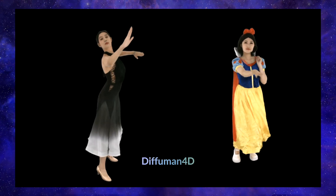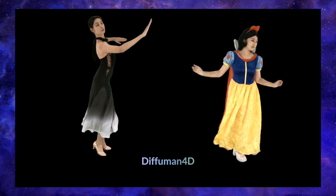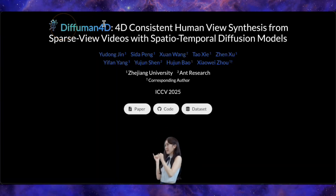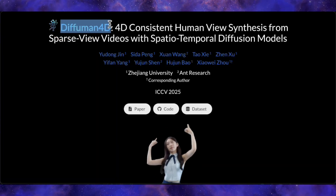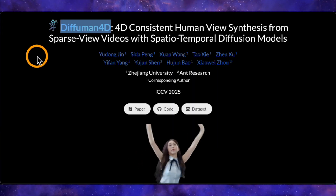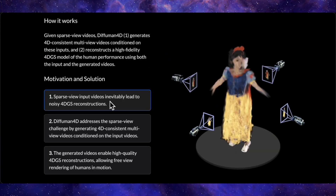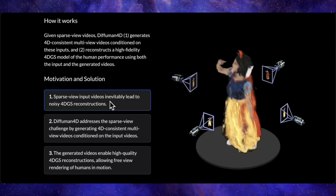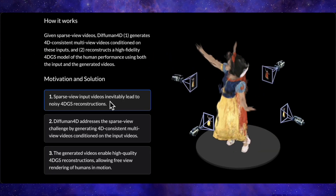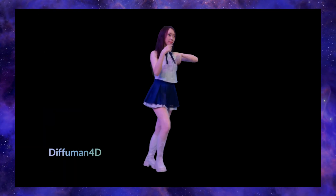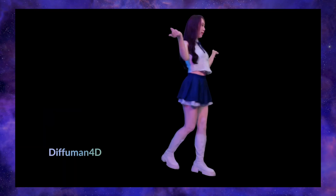Today we're taking a deep dive into a brand new AI tool called DifHuman 4D. Essentially, it takes a few sparse video feeds and generates a complete high-fidelity volumetric video, allowing for a free viewpoint experience that is frankly mind-blowing.